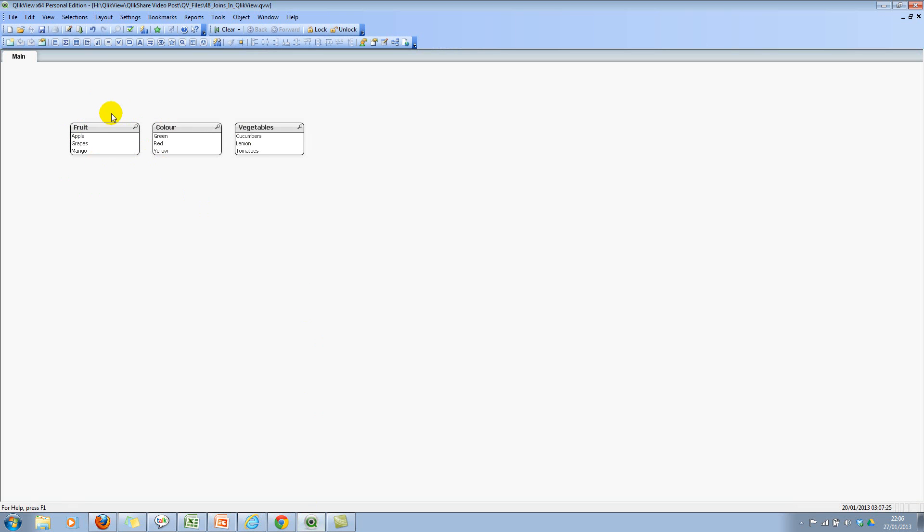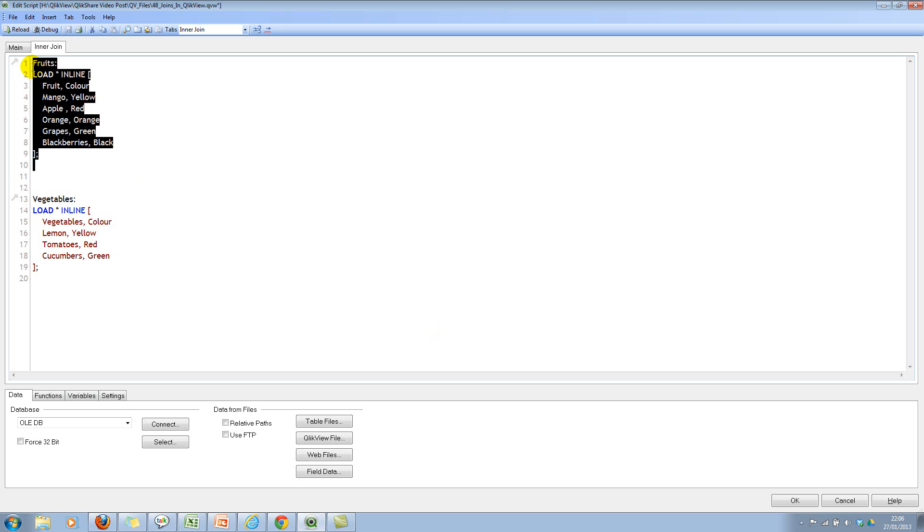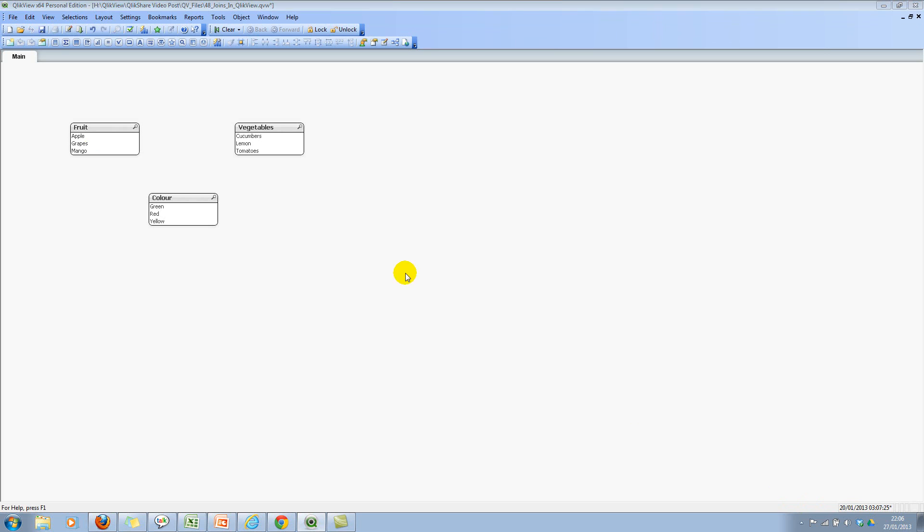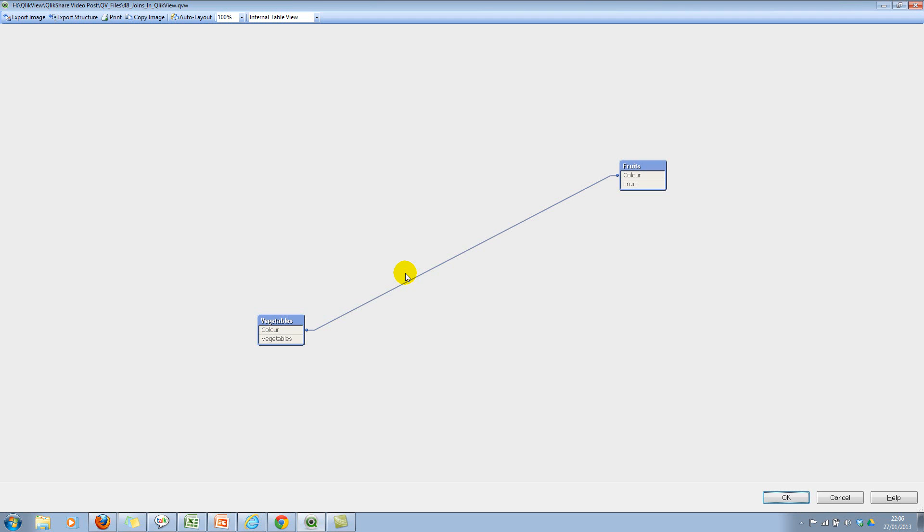I have two tables here: one is called fruits, the other one is vegetables. Let's look at the load script. So I have your fruits table, I have fruit and its color, and then vegetables and its color.